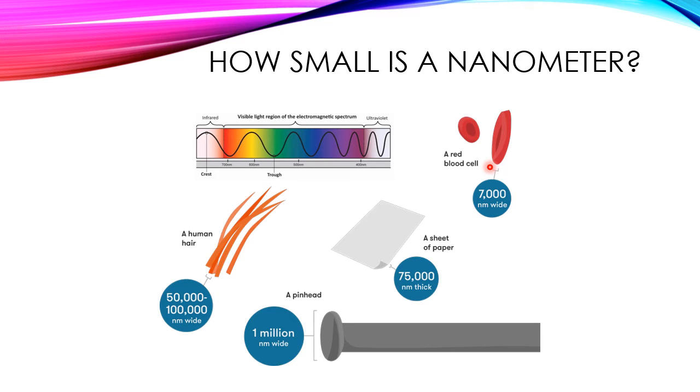But we can't see cells, so we can compare a nanometer to things that we can observe in everyday life. A sheet of paper, for example, is about 75,000 nanometers thick, and a human hair is between 50,000 and 100,000 nanometers thick. A pinhead is about 1 million nanometers thick.